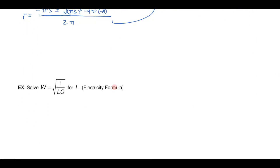Here's a formula from electricity. It says that W is the square root of 1 over LC. I'd like to solve this for L. I'd like to get the L all by himself. So I basically just have to unwrap this equation.